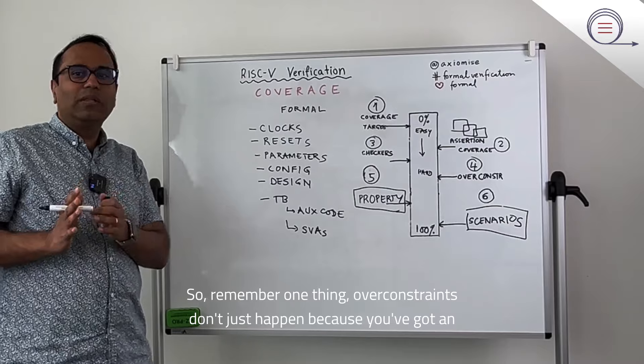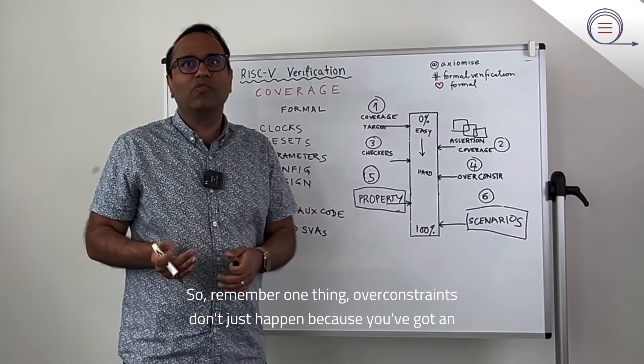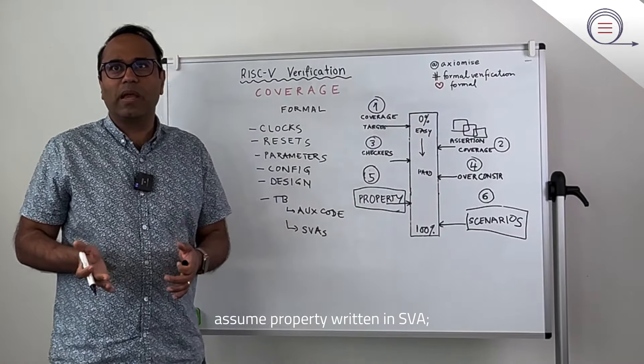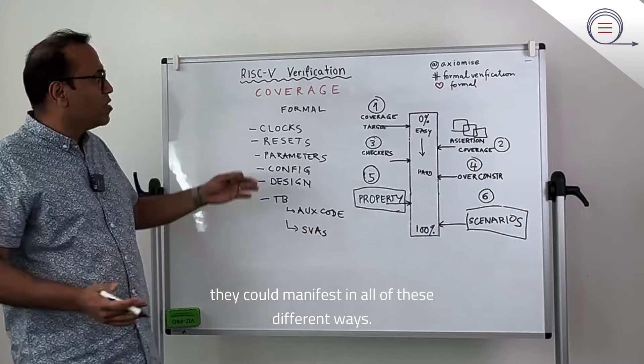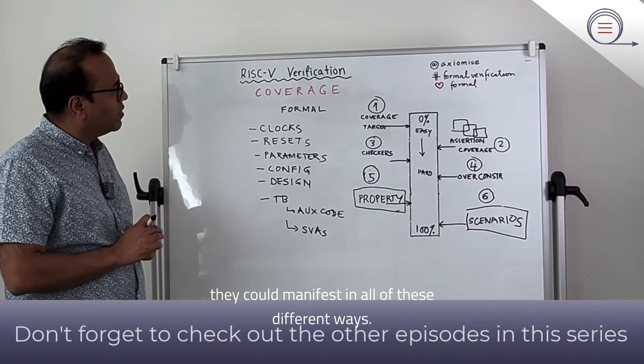Remember one thing: over-constraints don't just happen because you've got an assumed property written in SVA. They could manifest in all of these different ways.